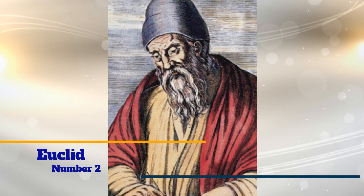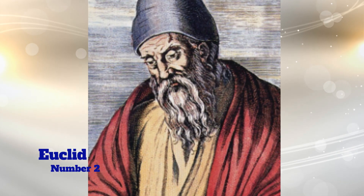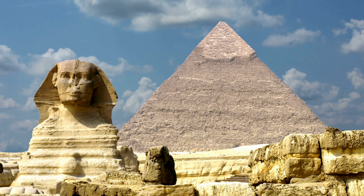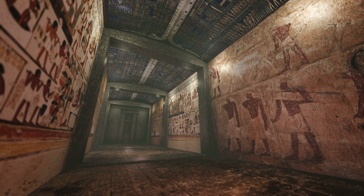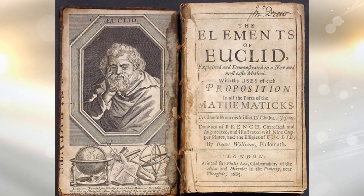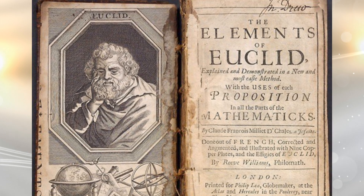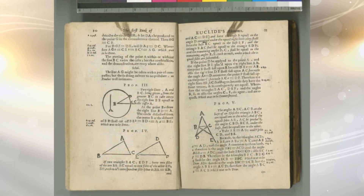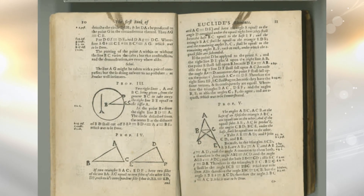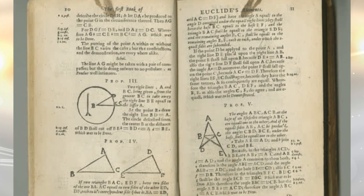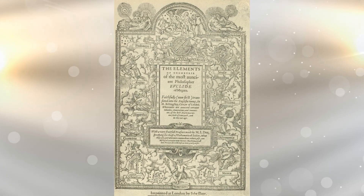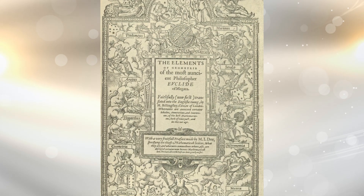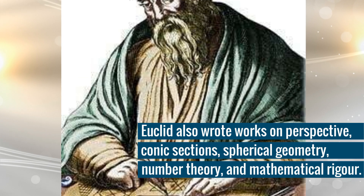Number 2: Euclid. Euclid was a Greek mathematician often referred to as the founder of geometry. He was active in Alexandria during the reign of Ptolemy I. His Elements is one of the most influential works in the history of mathematics, serving as the main textbook for teaching mathematics — especially geometry — from the time of its publication until the late 19th or early 20th century. In the Elements, Euclid deduced the theorems of what is now called Euclidean geometry from a small set of axioms.